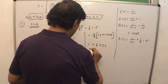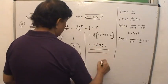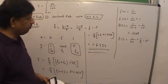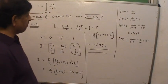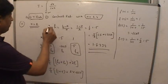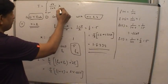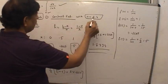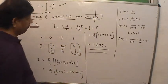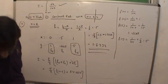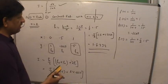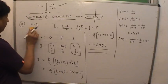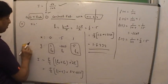The result is 1.8334 — this is the solution using the composite trapezoidal rule with n=2. Now we see what changes when n=4.